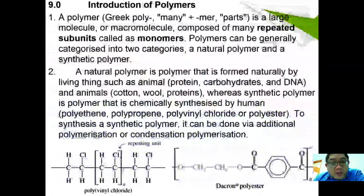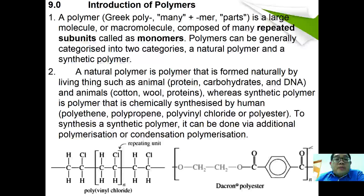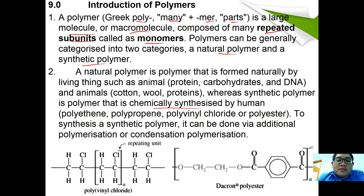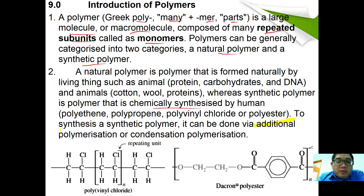A polymer is derived from the Greek words 'poly' meaning many and 'mer' meaning part. It is a large molecule, also called a macromolecule, composed of many repeating units called monomers. Polymers can be generally categorized into two categories: natural polymers and synthetic polymers. Natural polymers are formed naturally by living things such as animals and plants, whereas synthetic polymers are chemically synthesized by human beings. Synthetic polymers can be made via two types of polymerization: additional polymerization and condensation polymerization.